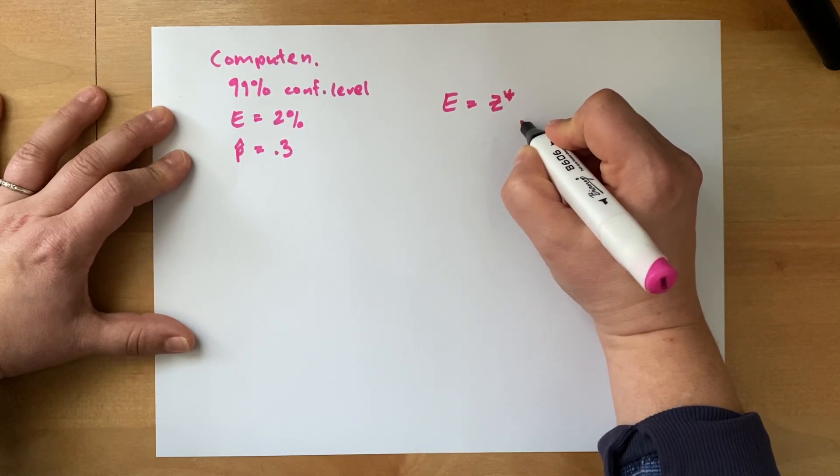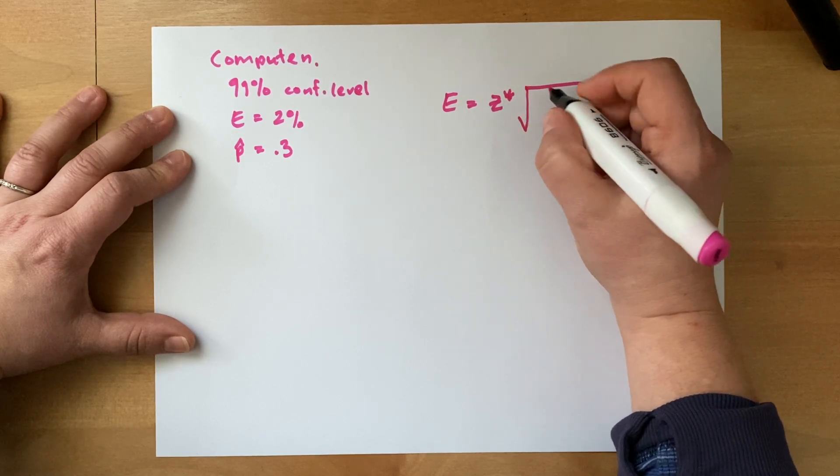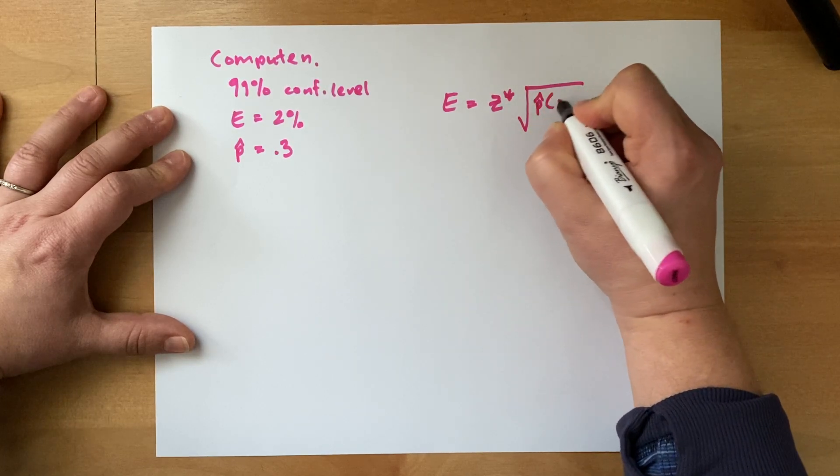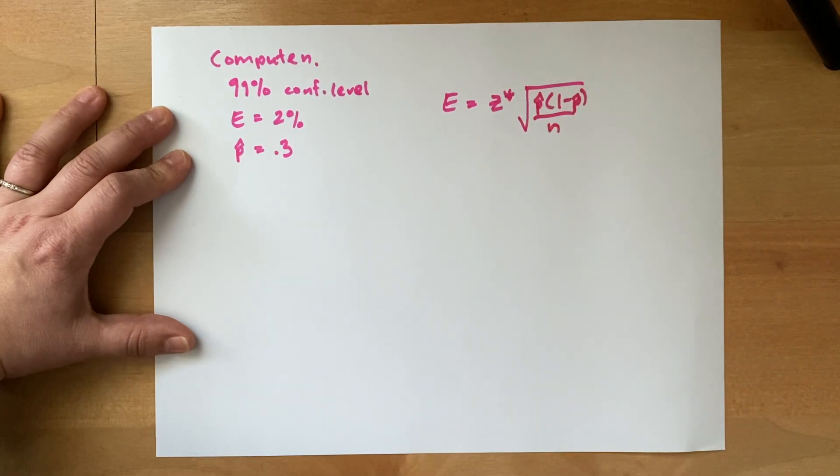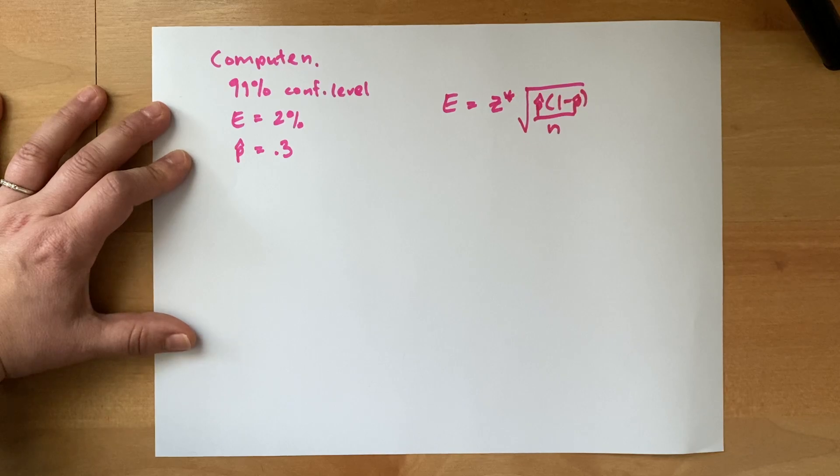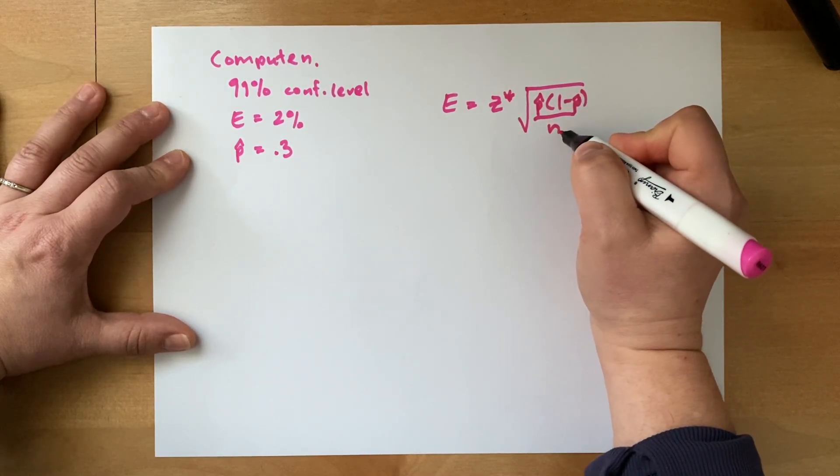So we take our margin of error formula: z star times the square root of p hat times 1 minus p hat divided by n. So this is where it all starts and now we can use a little bit of algebra to solve for n.